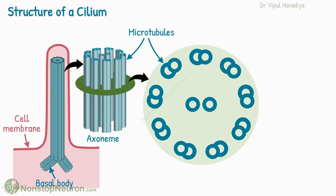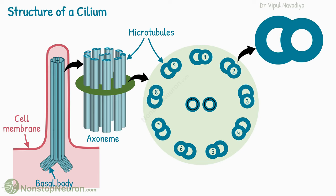The axoneme is made up of microtubules. There are two complete microtubules at the center — by complete, I mean they make full circles in a cross-section. Surrounding this pair of central microtubules are nine pairs of other microtubules. In each of these pairs, one microtubule is complete, making a full circle in cross-section, and the other one is incomplete — it does not make a full circle and is fused to the complete microtubule.